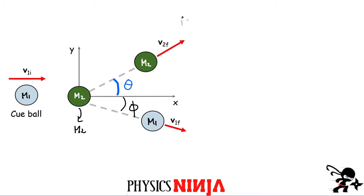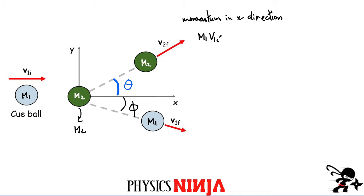Let's start by considering momentum in the x-direction. We want to write an expression for conservation of momentum. There's no external force on the system, so the initial momentum is simply m1 times v1 initial. Mass m2 doesn't have any momentum in the x-direction, so that's it — this is the total momentum before the collision.